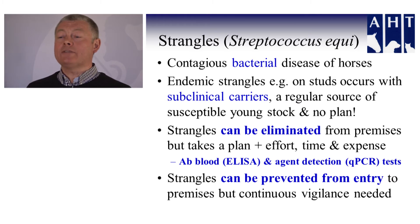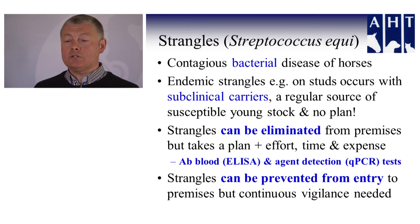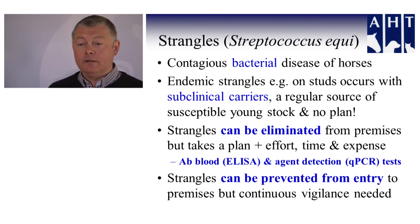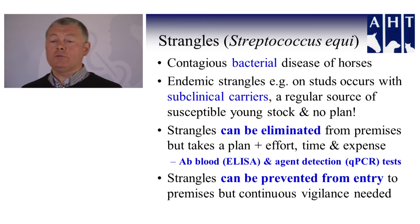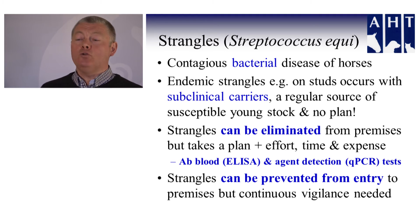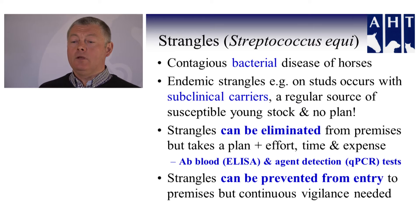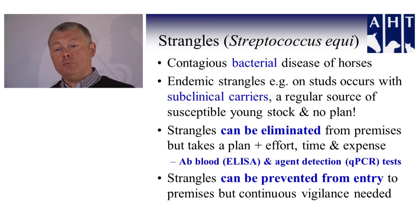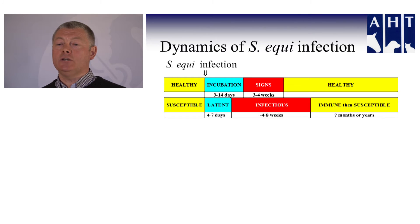Strangles can be eliminated from premises, but it does take a plan, time, effort, and expense. You need to adopt laboratory testing — blood tests and agent detection — in order to eliminate this infection from premises. Strangles can be prevented from coming onto premises, but people do need continuous vigilance to achieve that.